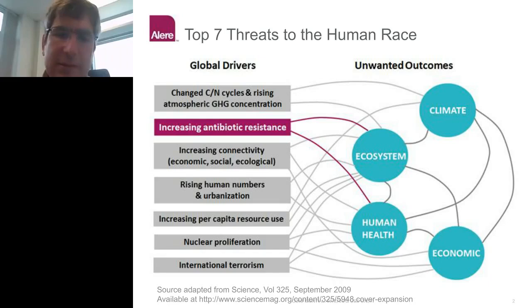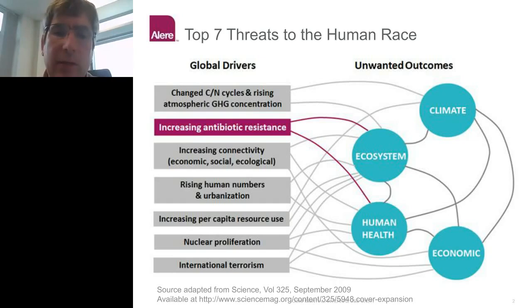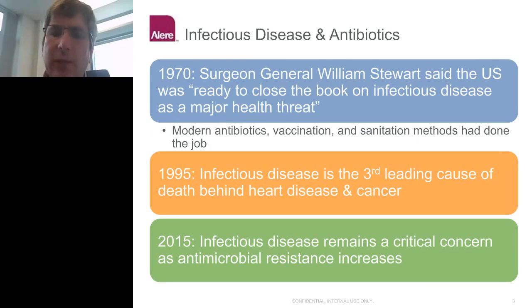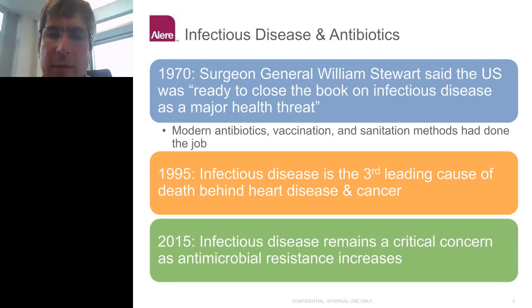Right now, roughly 10% of people have Staph in their nose, and 1–2% of people in the community have methicillin-resistant Staphylococcus — and that number is going up, not only hospital-acquired but community-acquired as well. Back in 1970, the Surgeon General said the United States was ready to close the book on infectious disease as a major health threat. But by 1995, infectious disease was the number three killer, behind only heart disease and cancer.